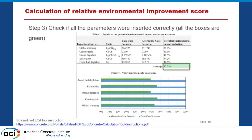For the environmental impact calculations, we not only focused on CO2, but also considered other impact categories: carcinogenic, ozone depletion, ecotoxicity, and fossil fuel depletion. Those are five main important impact categories affecting the lifecycle environmental impacts of the materials. The weighting system among these five categories averaged the amount of reductions caused by introducing the new mixture.